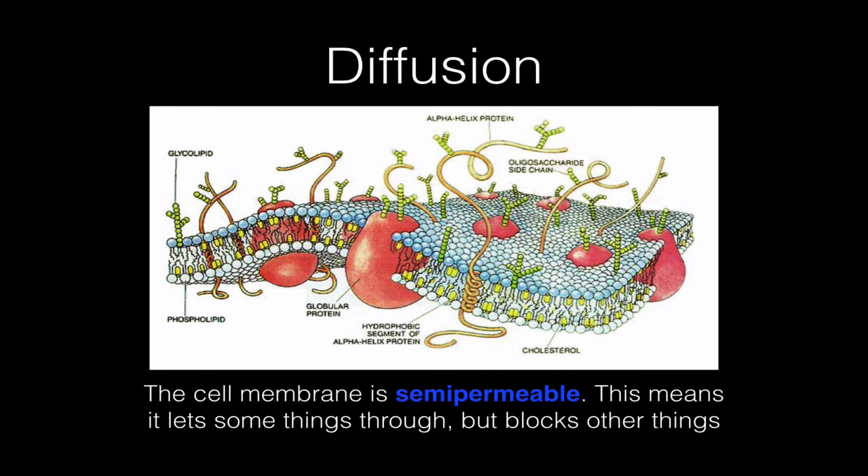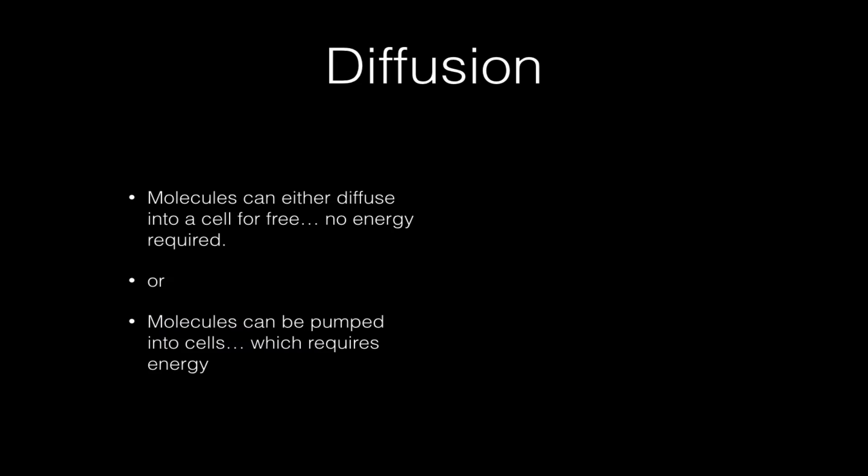Diffusion happens because the cell membrane is semi-permeable. The word semi-permeable means that the cell membrane will not let everything through. It acts like a filter — it will block some things and allow other things through.